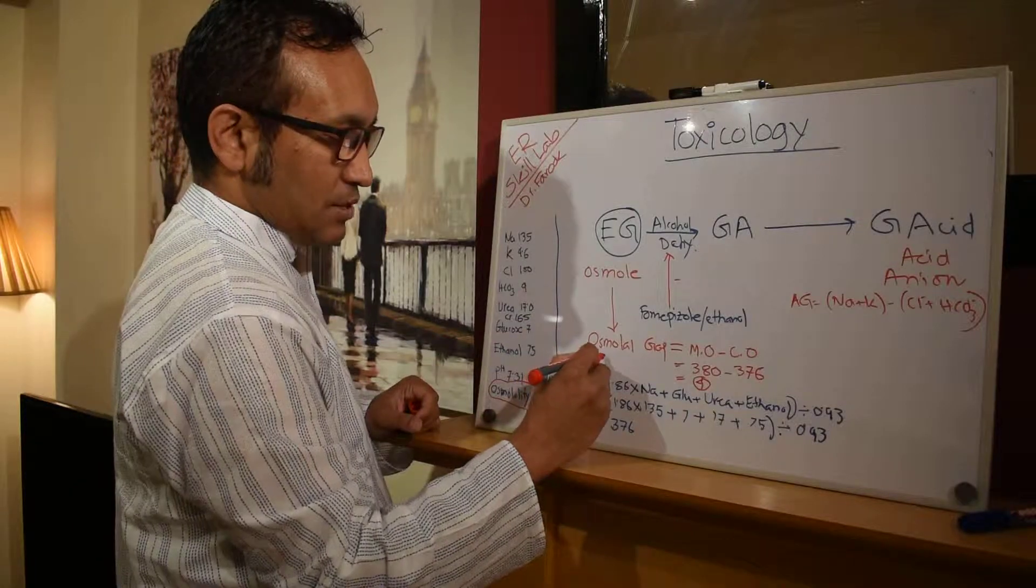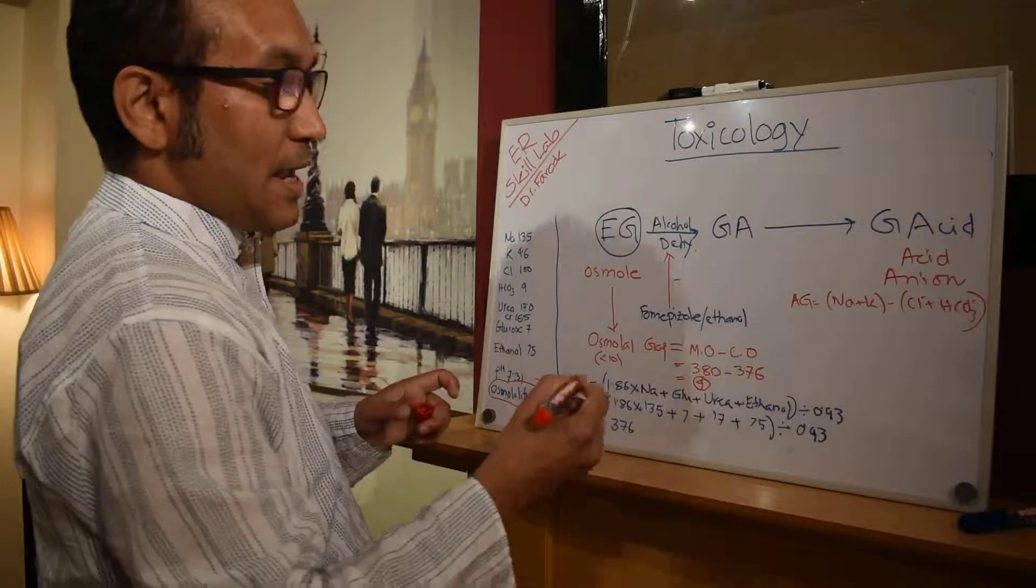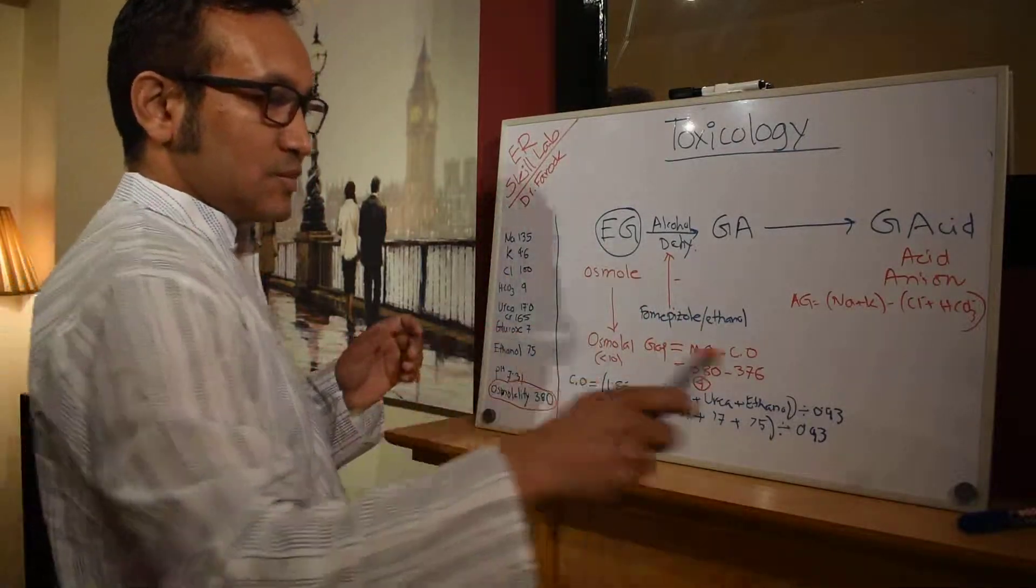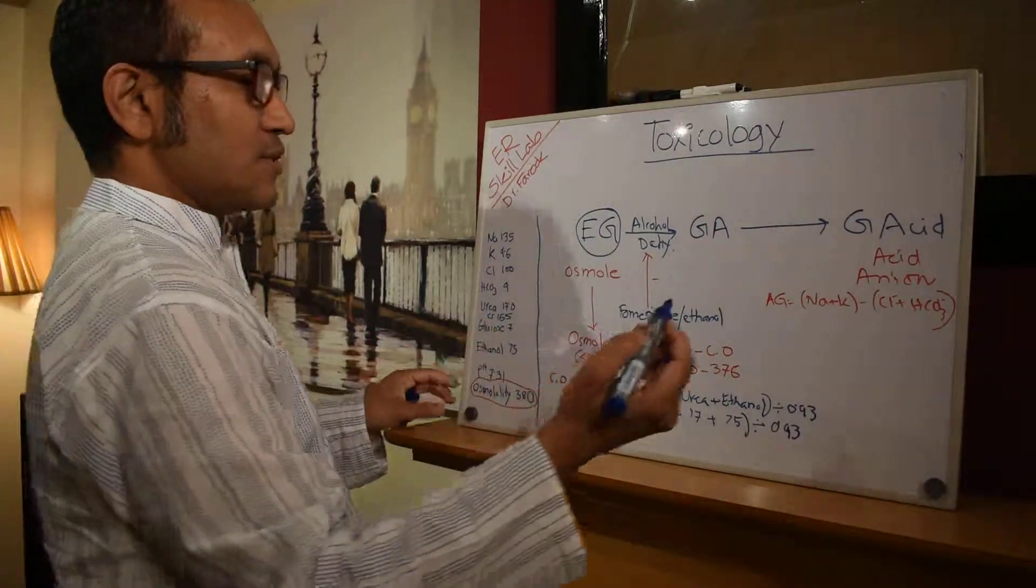What is the normal osmolality gap? Anything I would say less than 10 is normal, so 4 is normal. What's the anion gap? It's sodium plus potassium minus chloride and bicarbonate, everybody knows this formula.